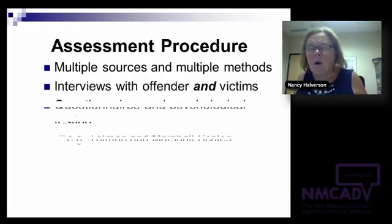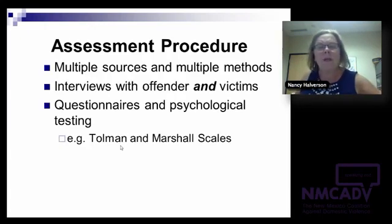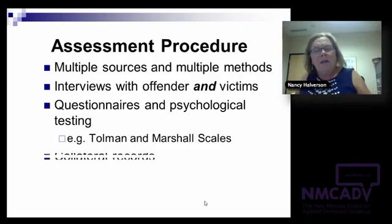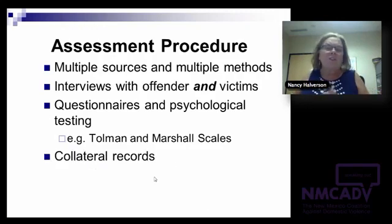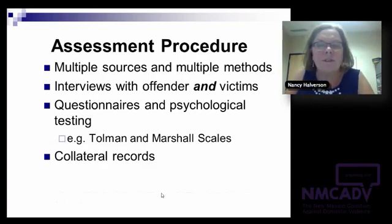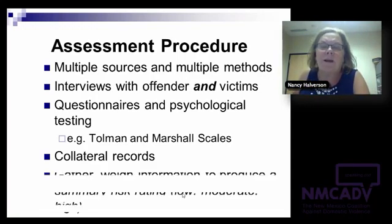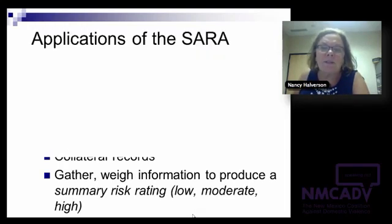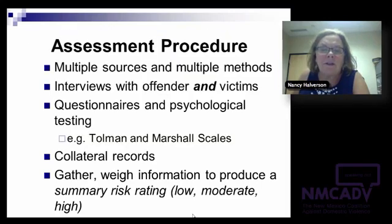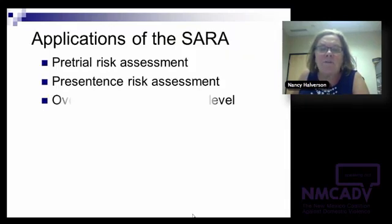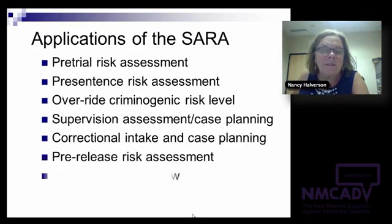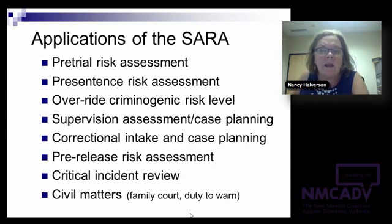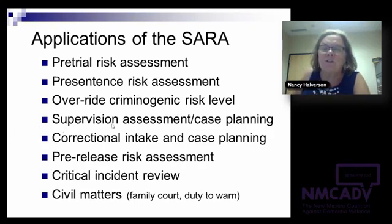There are four sections of the SARA, scored on 20 items. The first section is the criminal history section. Items include whether or not there's been an assault of family members in the past — brothers, sisters, parents, uncles and aunts — whether or not there have been assaults of strangers or acquaintances, and lastly, whether there are past violations of conditional release or community supervision.